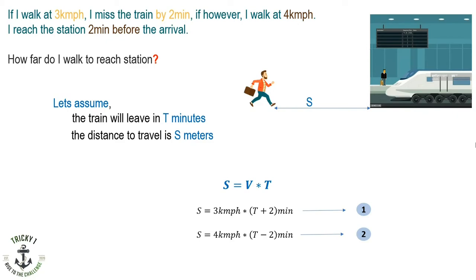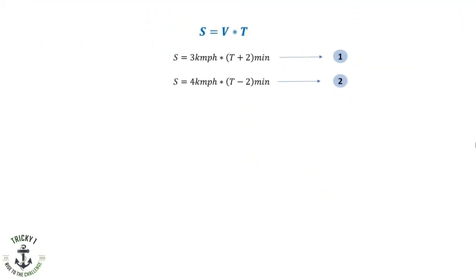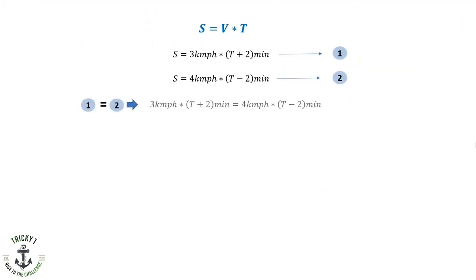So we found two equations. But in both cases, the distance I traveled is S. And we can equate both equations. So 3 km per hour times T plus 2 minutes equals 4 km per hour times T minus 2 minutes. If we simplify the equations, we will get T equals 14. And substitute T equals 14 in the first equation.